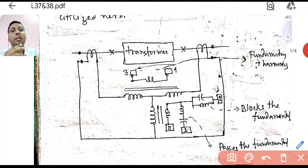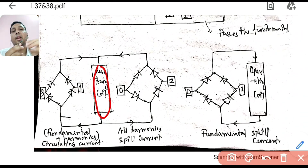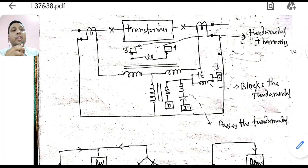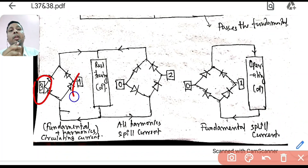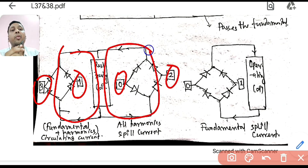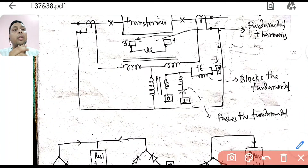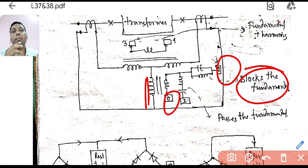Now for the relay connection: the restraining coil in the relay is fed from terminals 3 and 4, which carry the normal restraining current — the same as in normal percentage bias protection, so there is no change there. Additionally, terminals 0 and 2 are also fed into the restraining coil. Terminals 0 and 2 measure the harmonic component of the spill current. In case of a fault, this harmonic value will be negligible, but during inrush it will be very high, providing extra restraining current.